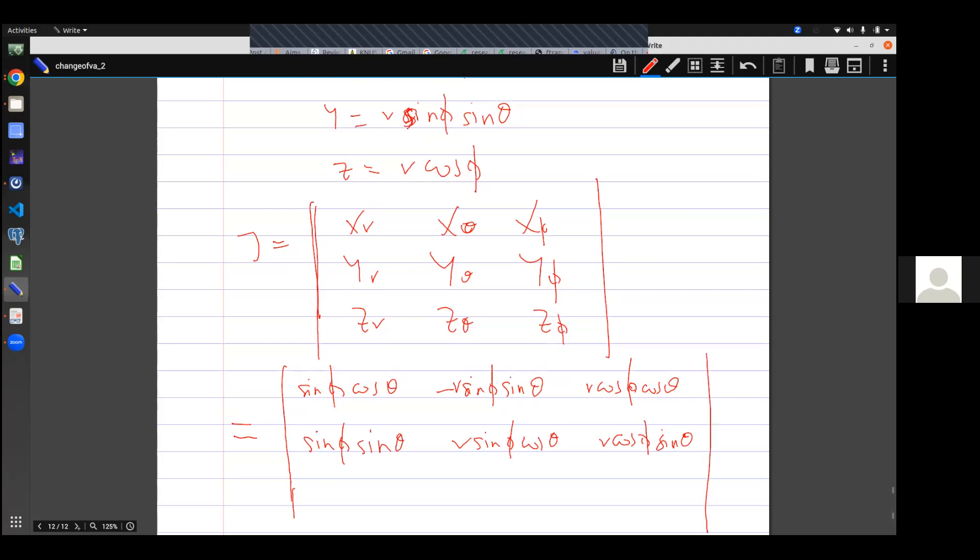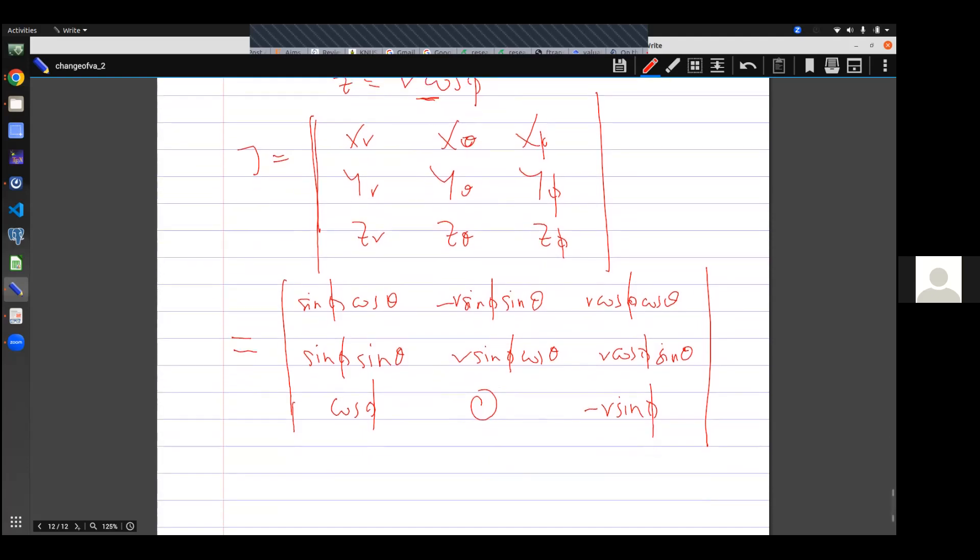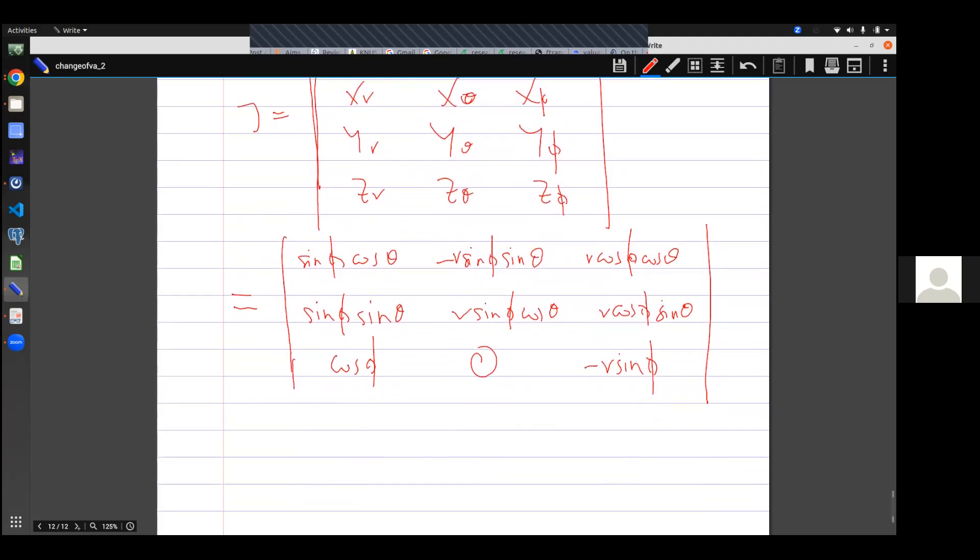∂z/∂r, I'll simply get cos φ. With respect to θ, there's no theta here, so I'll get zero. With respect to φ, I'll get negative r sin φ, because it is cos. This is 3 by 3, so I'll leave you to figure out how to get the determinant. And in that, you're expecting to get negative r squared sin φ.